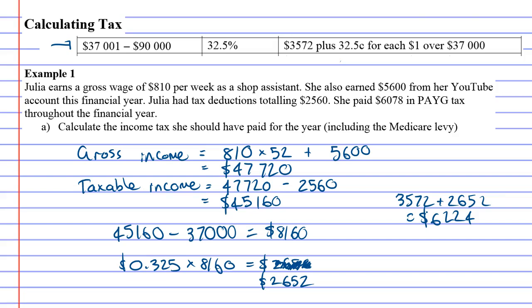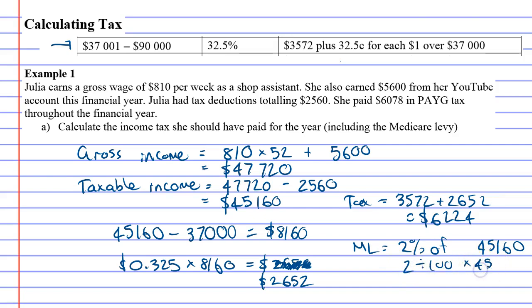This question also wants you to find the Medicare levy as well. The Medicare levy is going to be two percent of your taxable income — so off the forty-five thousand one hundred and sixty. Just like we've learned earlier, take the percentage, divide it by a hundred, and times it by the amount. Two divided by one hundred, times forty-five thousand one hundred and sixty equals nine hundred and three dollars twenty. That's the Medicare levy.